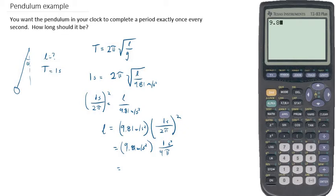So let's type that in our calculator. We've got 9.81 times 1, so we actually don't need to do that. We need to divide by 4 and also by π squared.